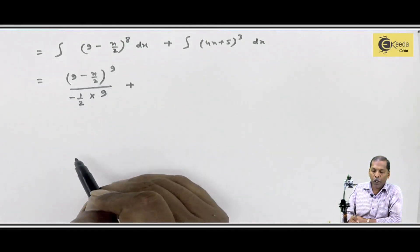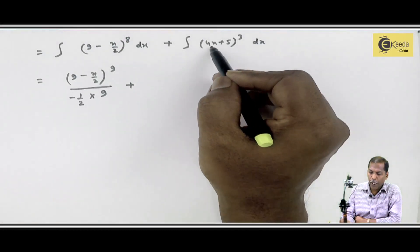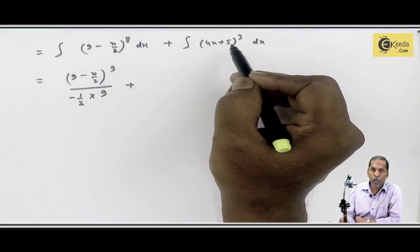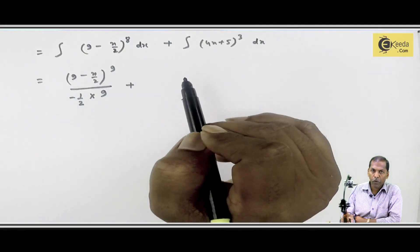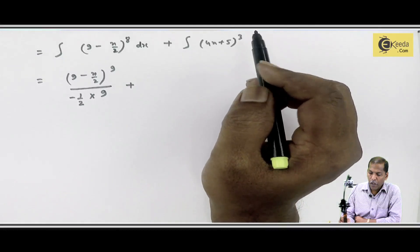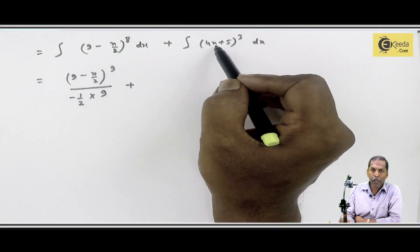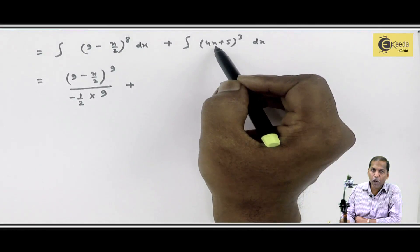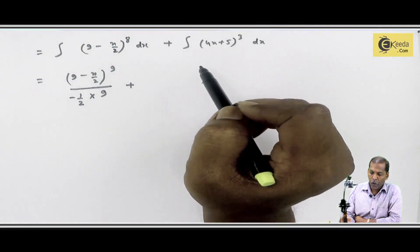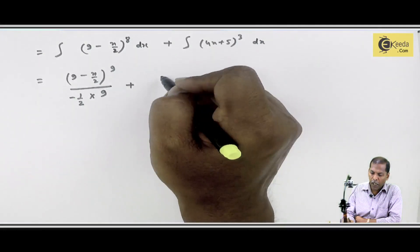After that plus, then the second term which is 4x plus 5, its cube. Now here also the inner function is in x, so here also we can directly apply the rule. So what answer should come?